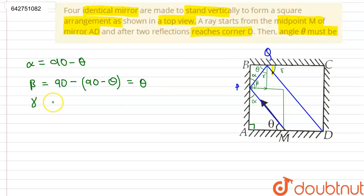As this angle is 90 degrees, angle gamma equals 90 minus beta which equals 90 minus theta. And angle delta equals 90 minus gamma which equals 90 minus (90 minus theta) equals theta.